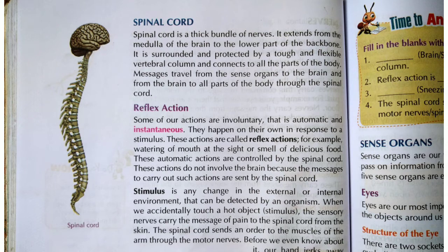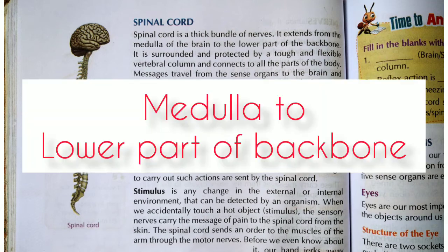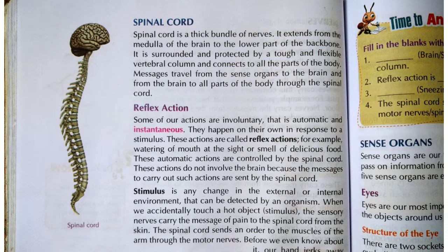The Spinal Cord extends up to the lower part of our backbone. So the Spinal Cord actually starts from the medulla of the brain — from the brain stem — to the lower part of our backbone. And it is like a bundle of nerves, with many nerves attached together.